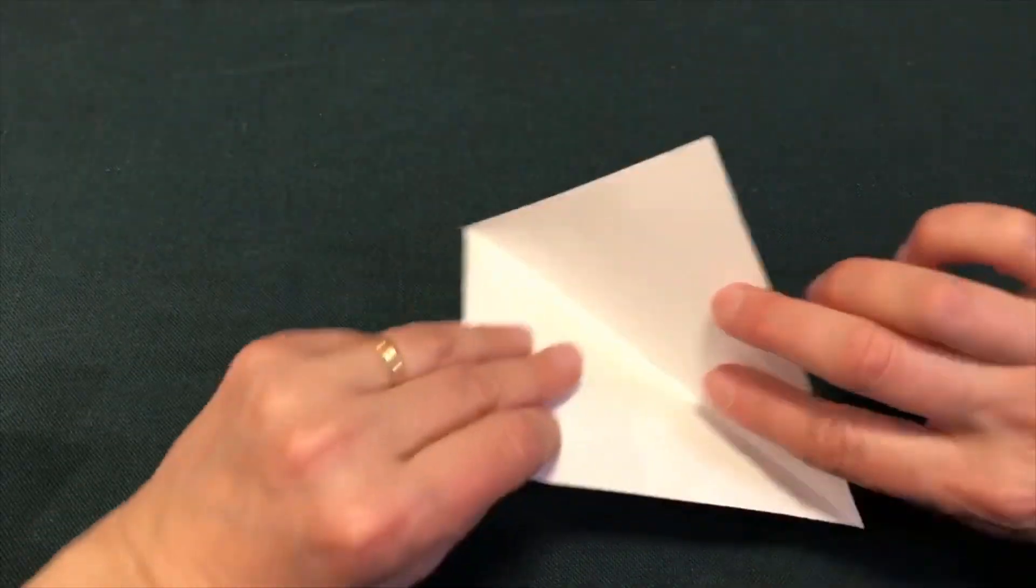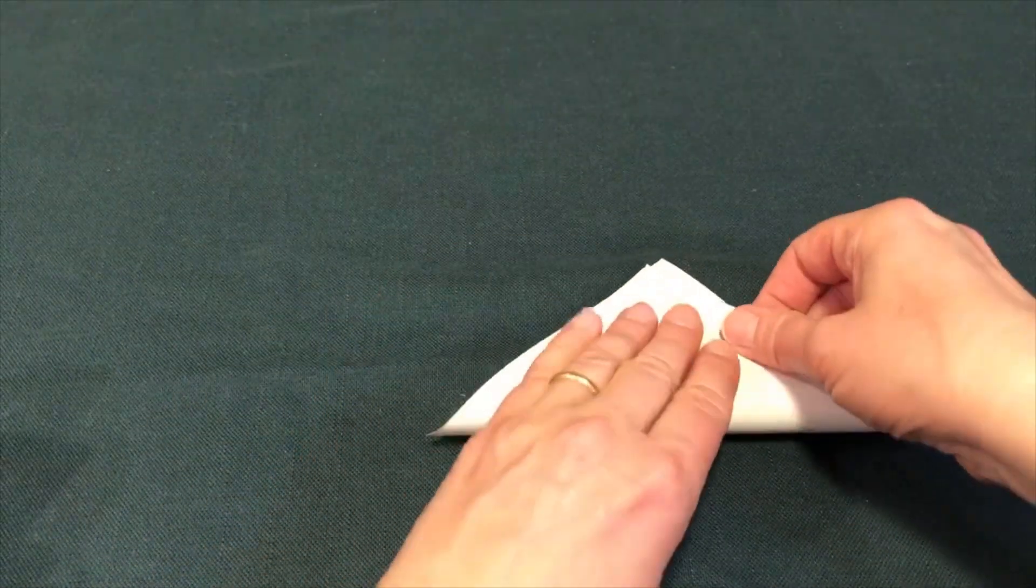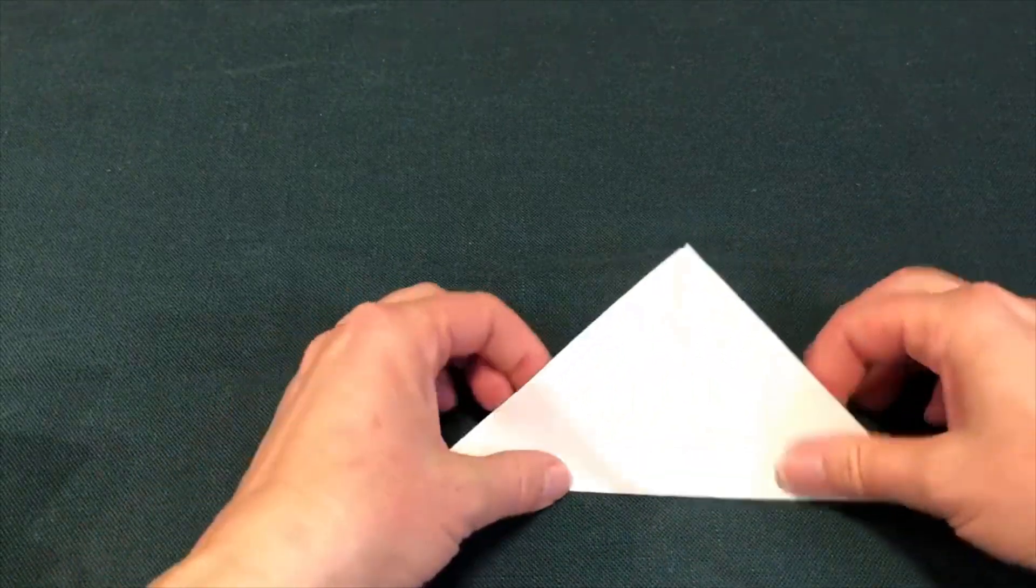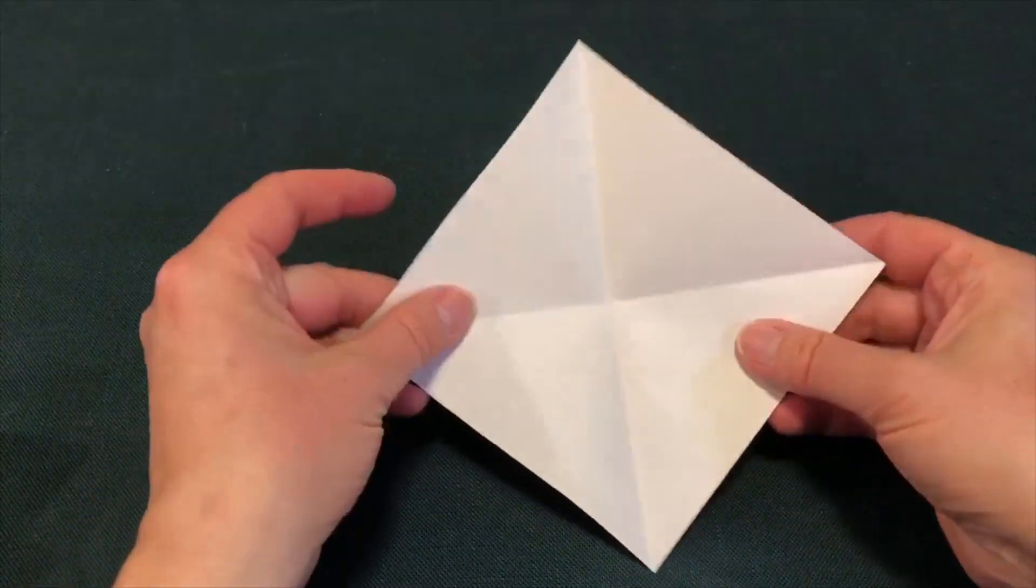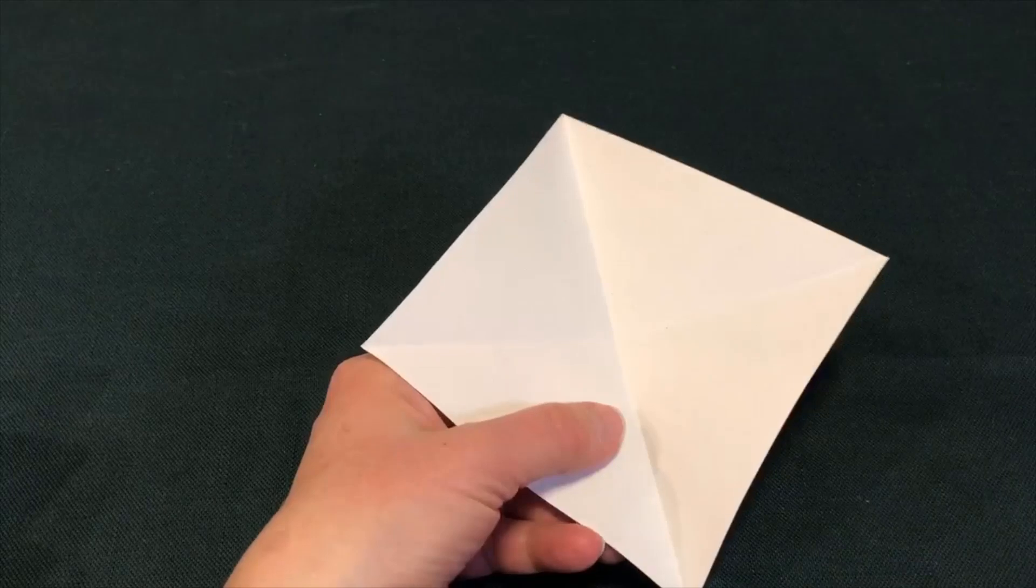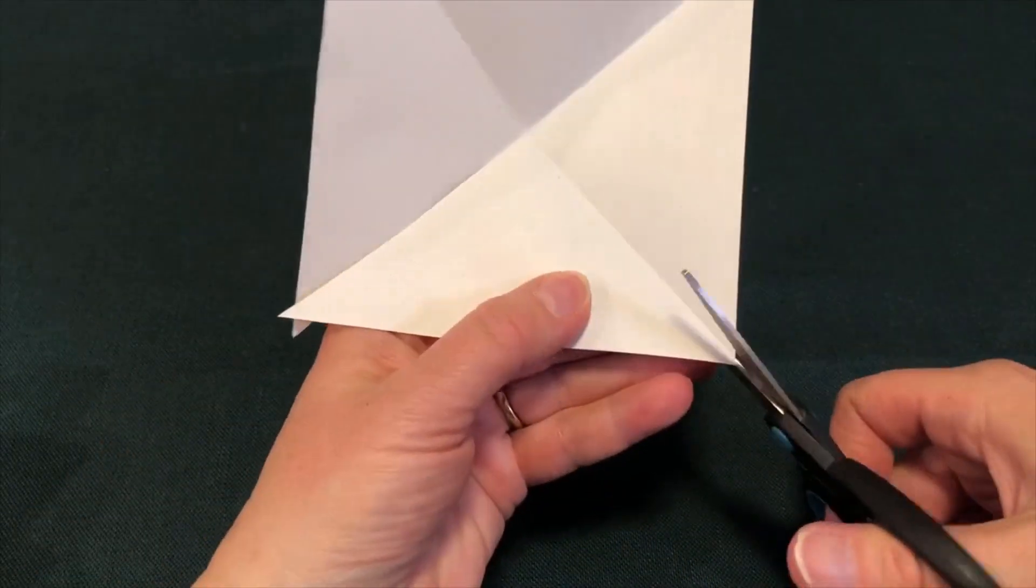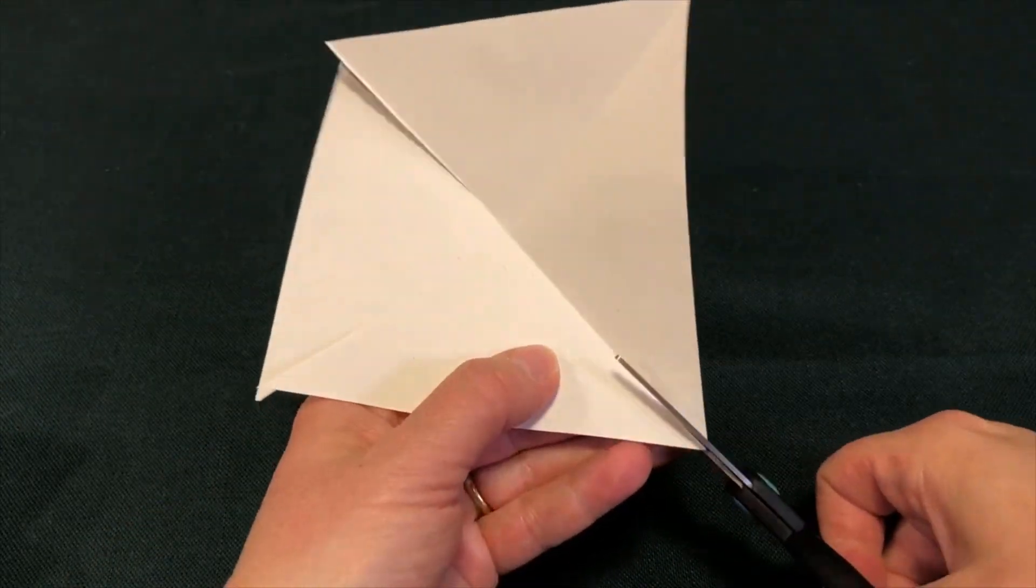Press it down and then open it up again. And then fold it along the other diagonal, press it down, open it up, and then you'll see those diagonal lines. So now we'll cut along them, cut on each of the four diagonals, but again, stopping before you reach the middle.